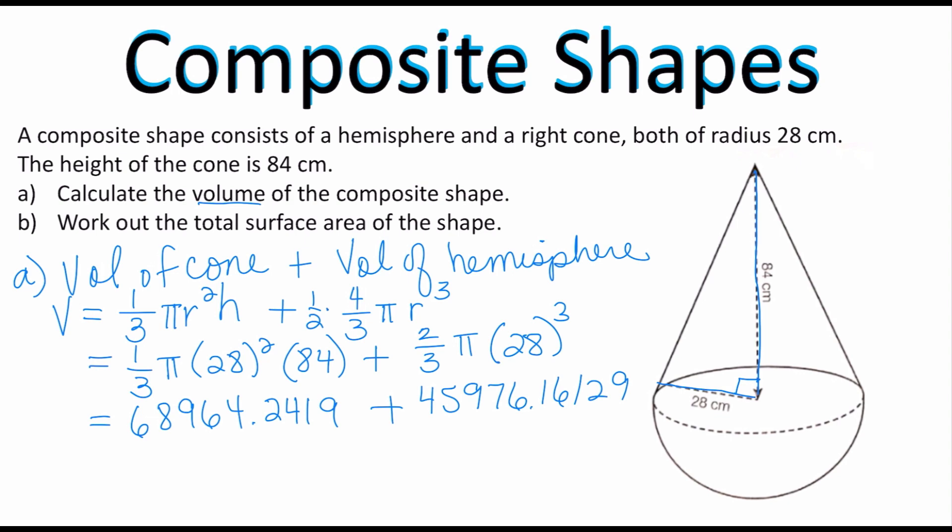Go ahead and add those two numbers together and we get a grand total of 114,940 if you round to the nearest whole number cubic centimeters. Remember the volume is always cubic so now we have figured out the answer to part A.